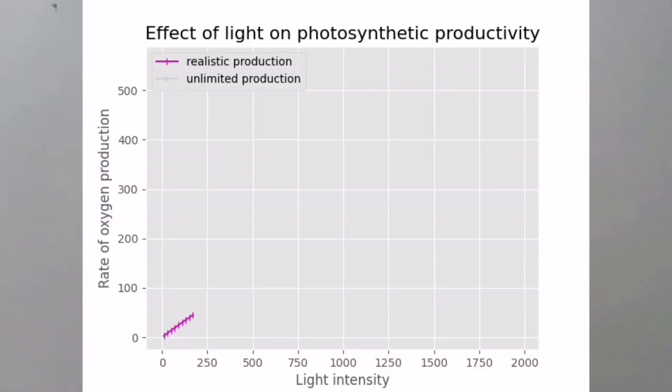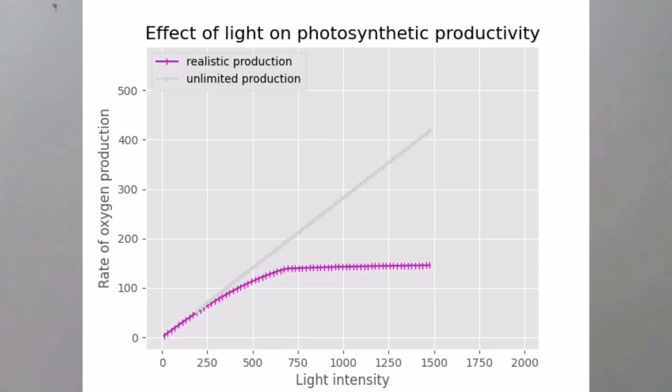On this graph, we see that initially the more light is shone on a plant, the more oxygen is produced, but at a certain point — which is different for every plant — an increase of light doesn't lead to higher oxygen production. Then we can say that the plant has reached its maximal photosynthetic productivity. The strength of our model is that we can additionally vary other parameters, for instance the duration of the lighting. This way we can investigate which process would enable higher maximal photosynthetic productivity.